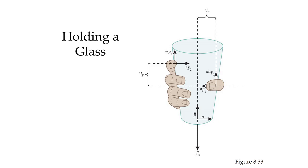Every finger, including the thumb, creates essentially two forces: a normal force and a tangential force. Additionally, we have the weight of the glass. If we add all of those up — the weight of the glass plus each finger creating two forces — that means we are going to have to control ten different forces acting on the cup. The central nervous system also has to control all the torques acting on the cup.